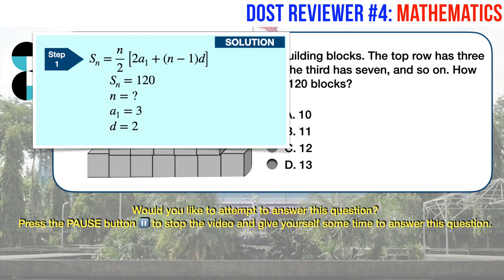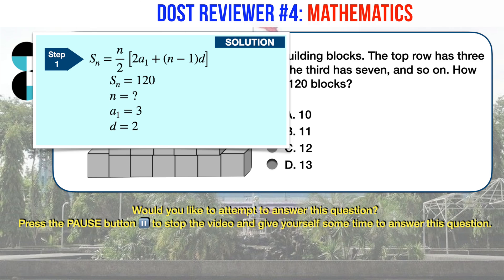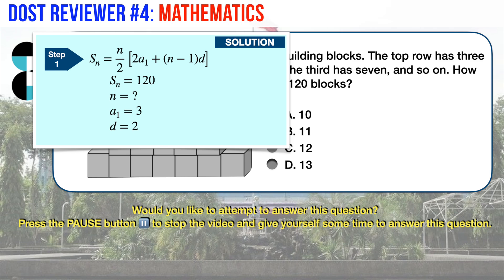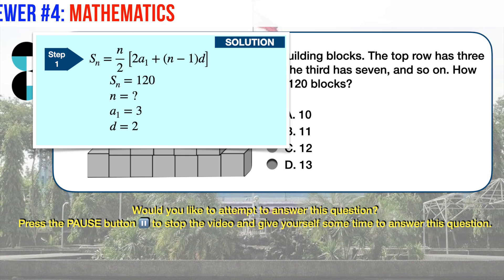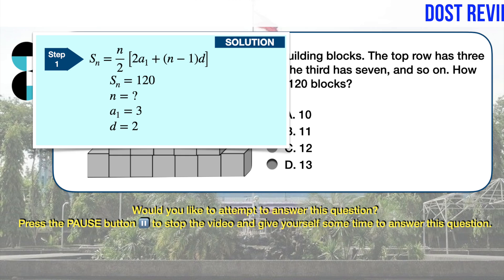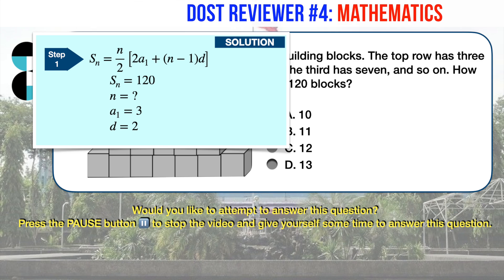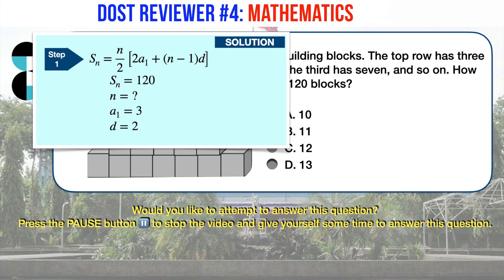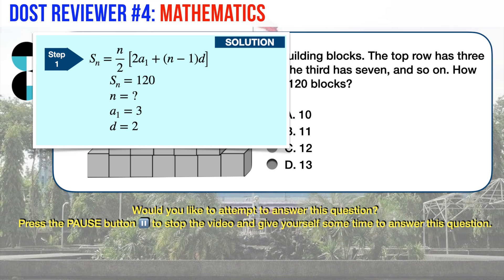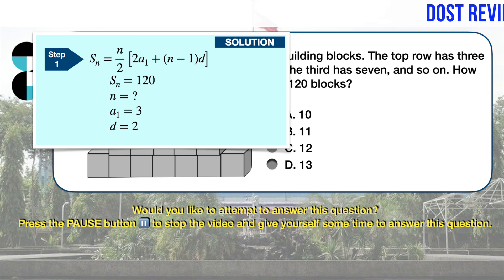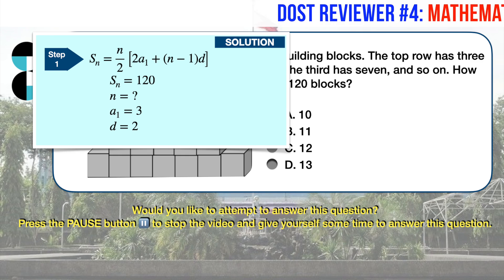Recall your formula for the sum of an arithmetic sequence. The sum SN equals N over 2, times the quantity 2A1 plus the quantity N minus 1 times D. Here, SN is 120; N is the number of terms we're looking for; A1, the first term, is 3; and D, the common difference, is 2 (since 3 plus 2 equals 5, 5 plus 2 equals 7, and so on).